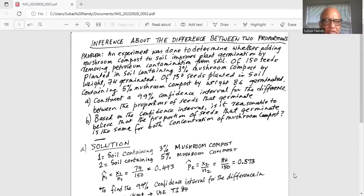Of 150 seeds planted in soil containing three percent mushroom compost by weight, 74 germinated out of 150.